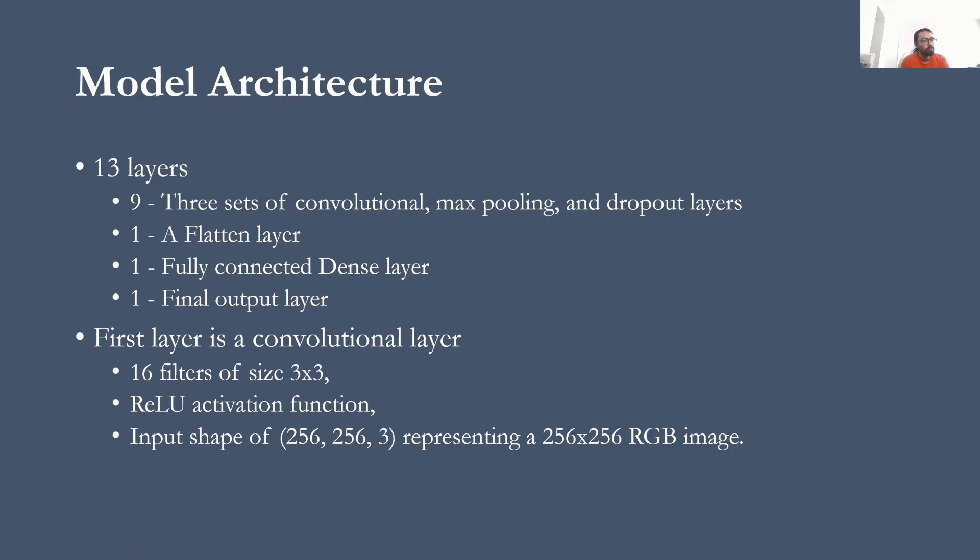So now to build the actual model itself, let me talk about the model architecture I have. I basically have 13 different layers. So I have three sets of convolution, max pooling, and dropout layer. What I mean is, I have a convolution layer. Let's say the first convolution layer is of 16 filters and size 3 by 3. And on the first layer, I should also mention the input shape of the file that I'm giving, which is 256 by 256, of course, that is maintaining the size, and I'm using the ReLU activation function. And after that, I have a max pooling layer and a dropout layer with 0.3. This is the first set of convolution, max pooling, and dropout layer. I have three of those.